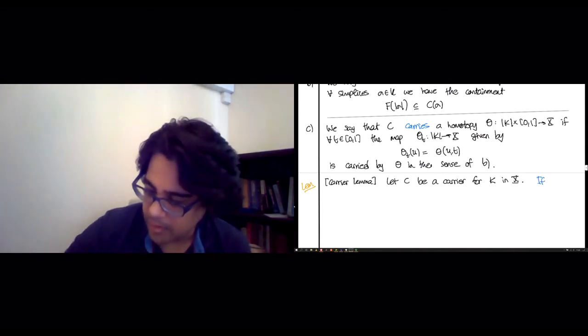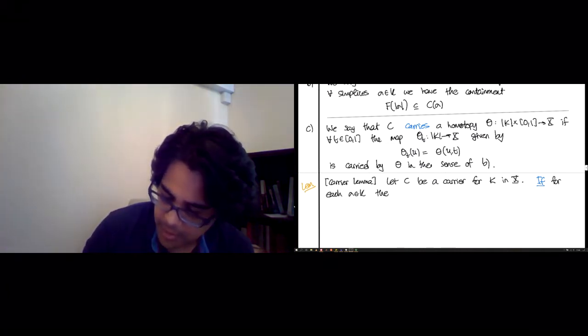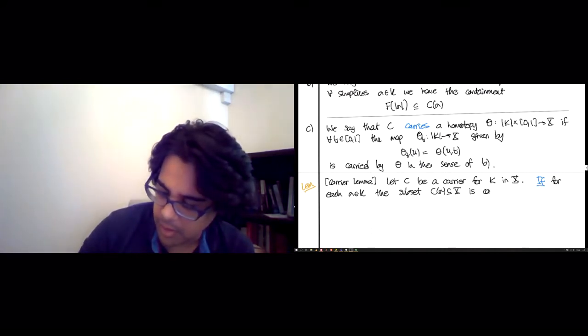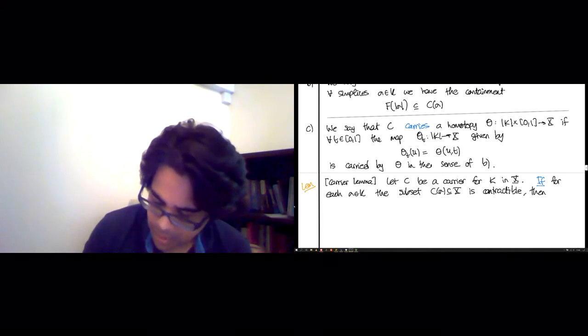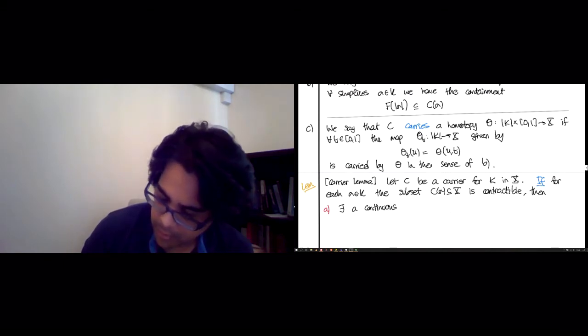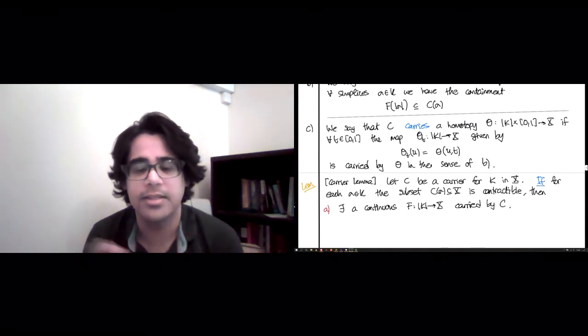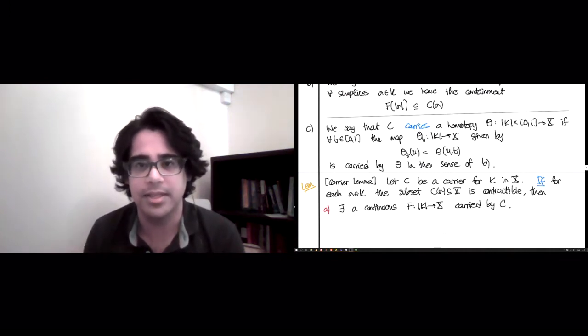If, and this is the big if, for each sigma in K, the subset C(sigma) of X is contractible, i.e., homotopy equivalent to a point, then three glorious consequences follow. Here's the first one: there exists a continuous map from the realization of K to X, carried by C. So you get for free that there is some map as long as these images are contractible. C(sigma) is contractible for every sigma in sight. You will get a map that's carried by C.